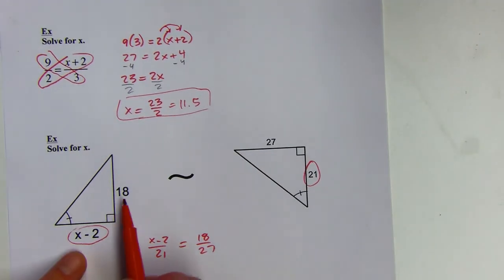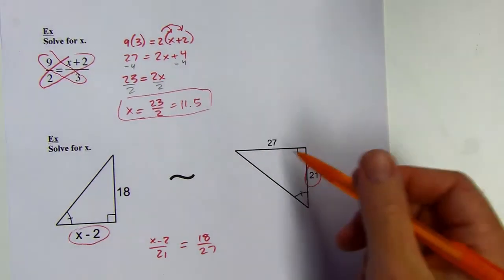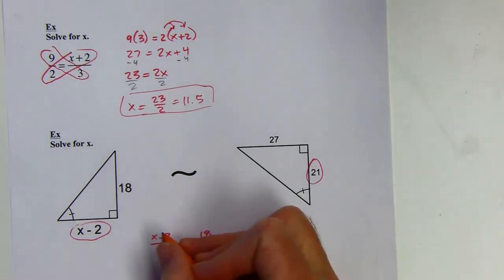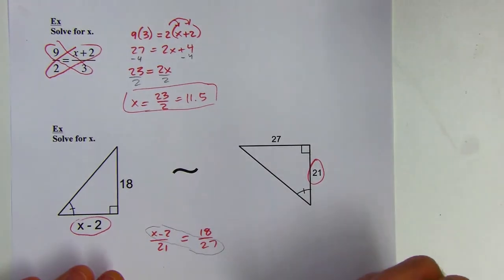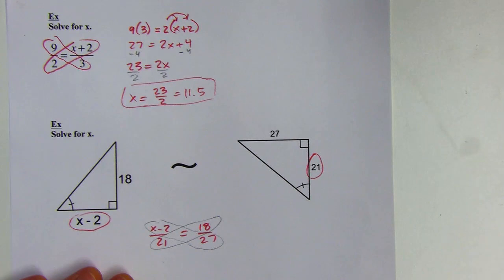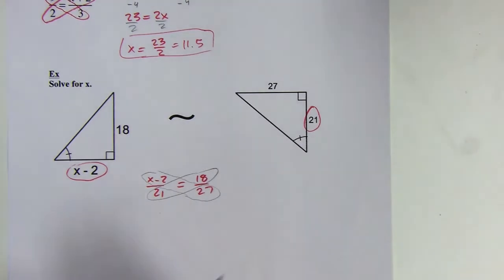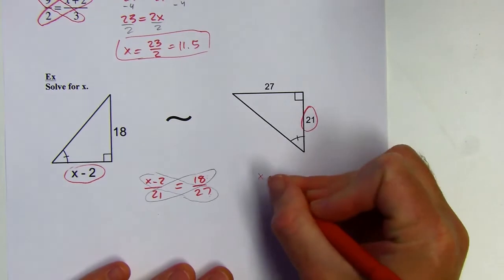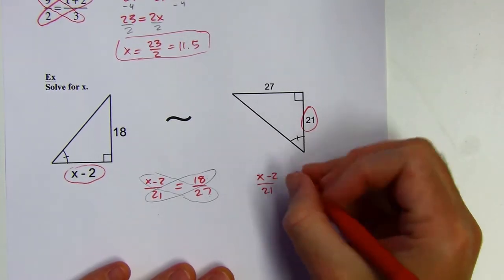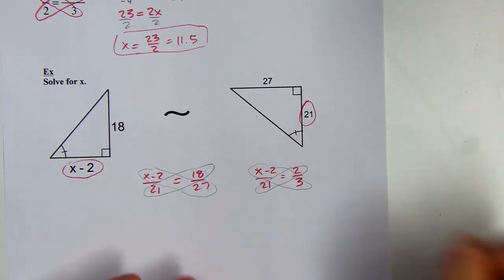So I can write the proportion: (x − 2) is to 21 as 18 is to 27. There are different versions of this proportion that work — you could flip it upside down — as long as (x − 2) is diagonal from 27, you'll get the same cross products. I notice I can reduce 18 over 27 by dividing by 9, giving two-thirds, so I'll work with smaller numbers.